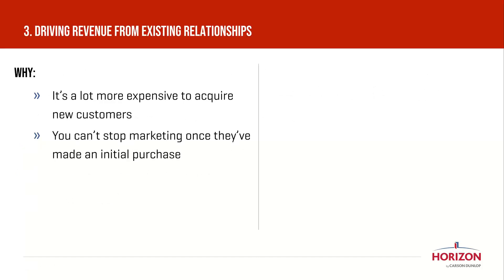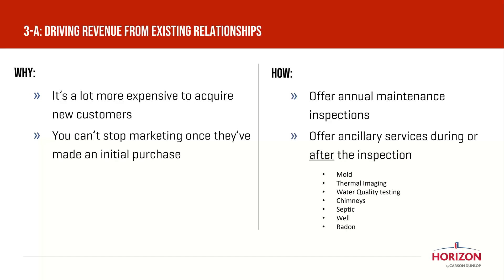Let's come back to existing customers for a second. We've noted why it's important to maintain those relationships, so let's look at a few points on how to do that. It's really about identifying your opportunities for repeat purchasing. Your existing customers have already made a purchase, they know you, they like you, they trust you. So if you've provided them a good experience, you've given them a reason to do business with you again. Consider things like offering clients an annual maintenance inspection, and ancillary services — either at the time of inspection or, more importantly, after the inspection, since real estate agents often don't like inspectors selling add-ons at the time of inspection.